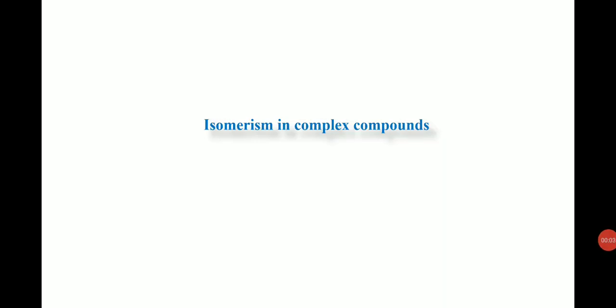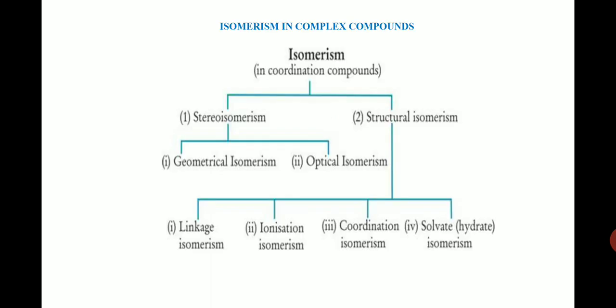Today we discuss the concept of isomerism in metal complexes. Like organic compounds, coordination compounds also exhibit isomerism. Mainly we have two types: stereo isomerism and structural isomerism. Stereo isomerism can be further divided into geometrical isomerism and optical isomerism. Structural isomerism can be divided into four categories: linkage isomerism, ionization isomerism, coordination isomerism, and solvate isomerism.